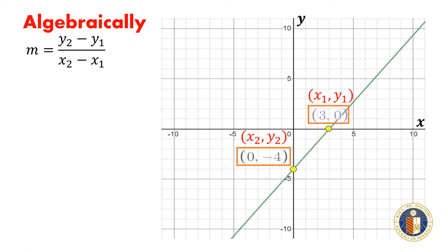The slope of the line is going to be equal to the ratio of the change in y to the change in x, or m is equal to negative 4 minus 0 all over 0 minus 3. m is equal to negative 4 all over negative 3. m is equal to 4 thirds.